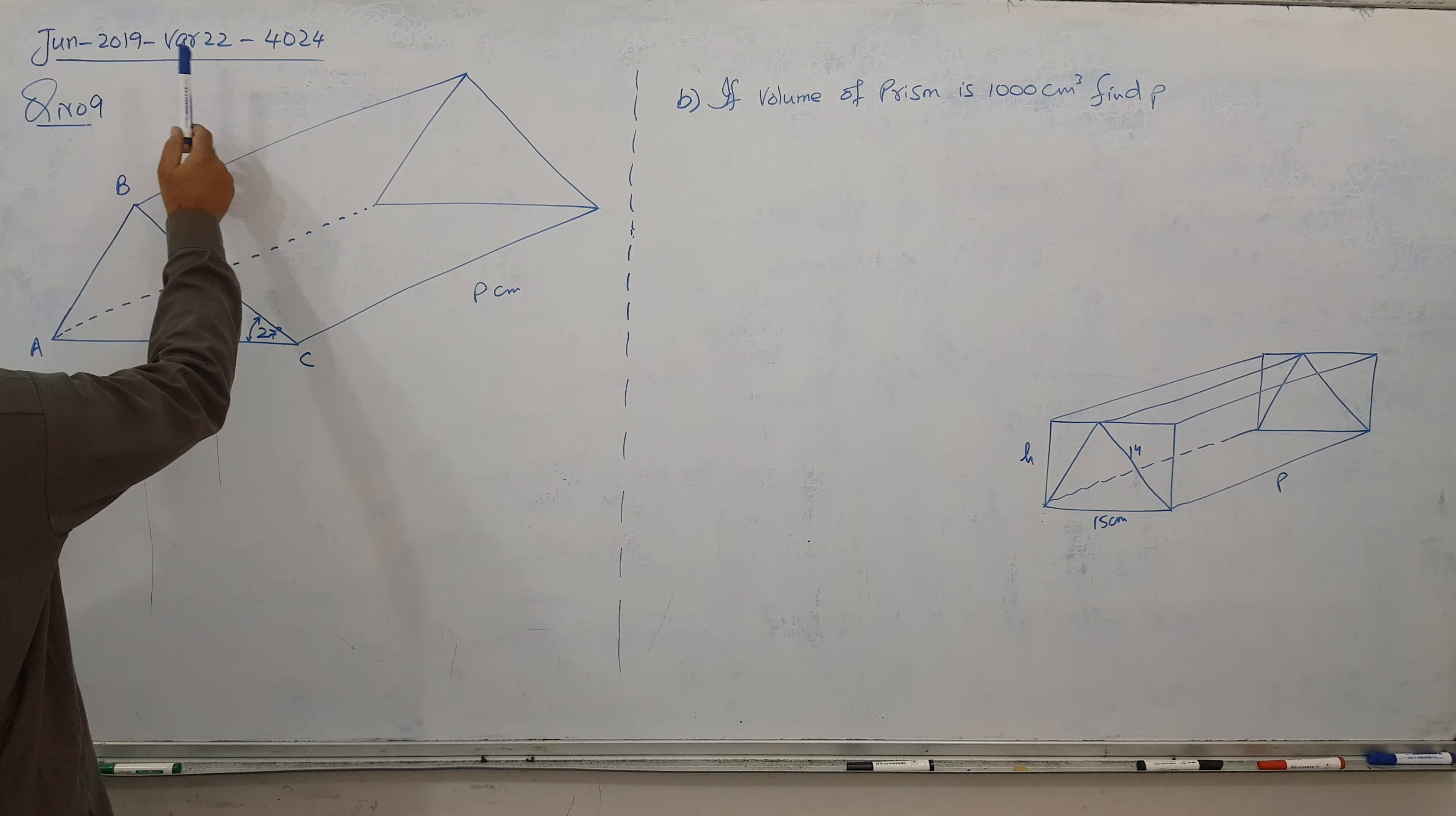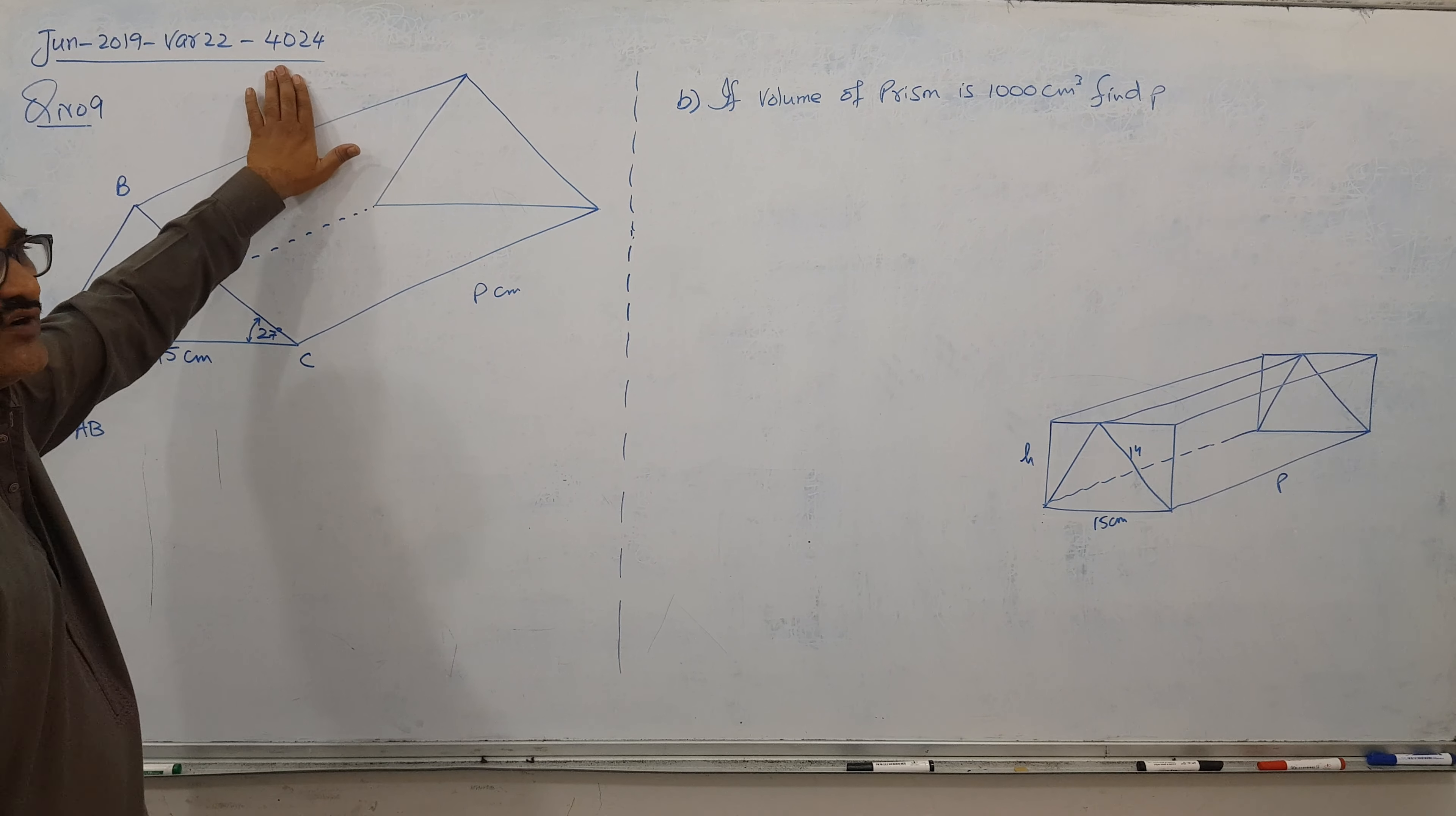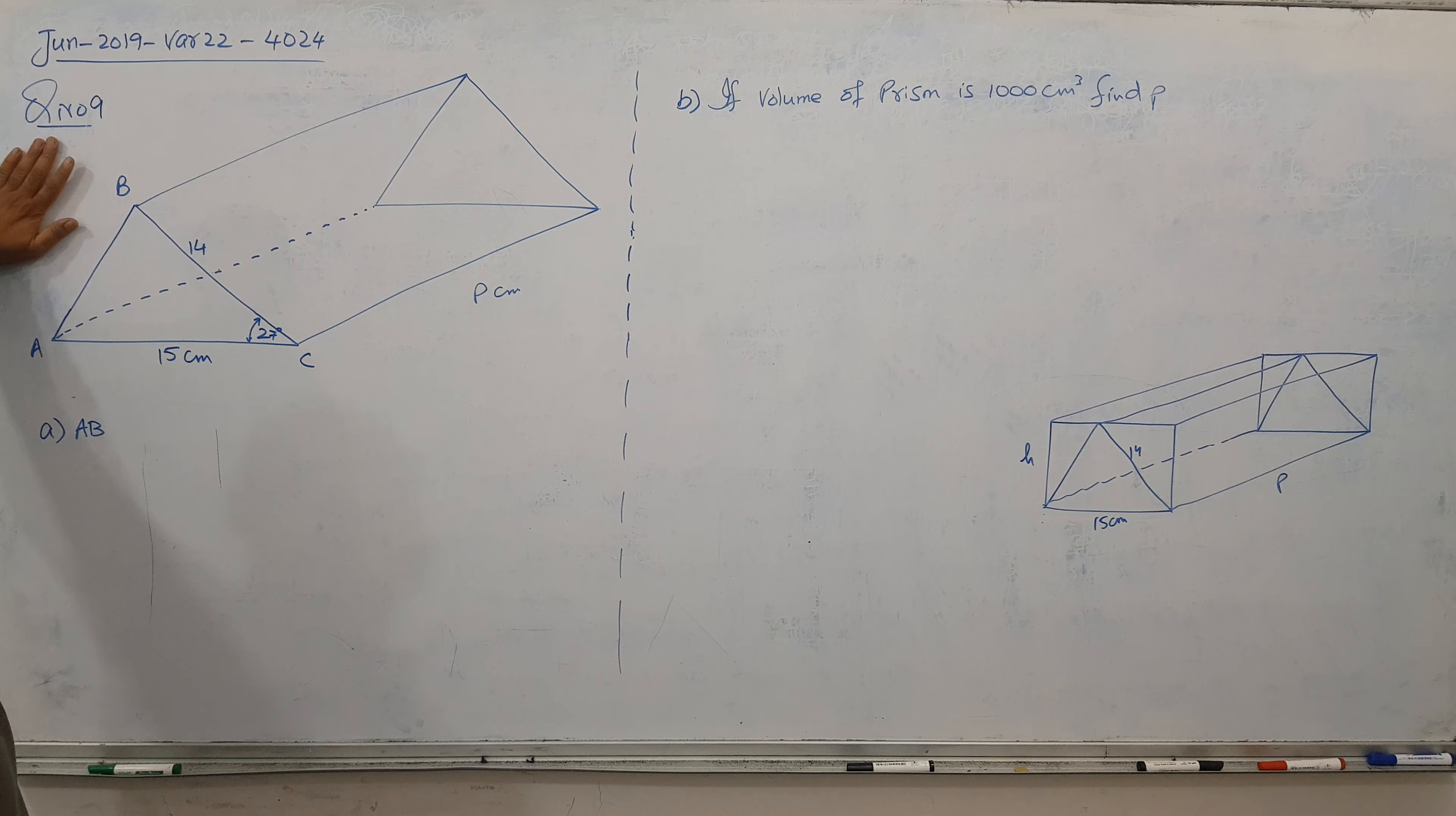Bismillahirrahmanirrahim. This is Jun 2019, Variant 22, code 4024, the GCSE syllabus mathematics. So we have our question number 9 here and we have a prism, a triangular prism.